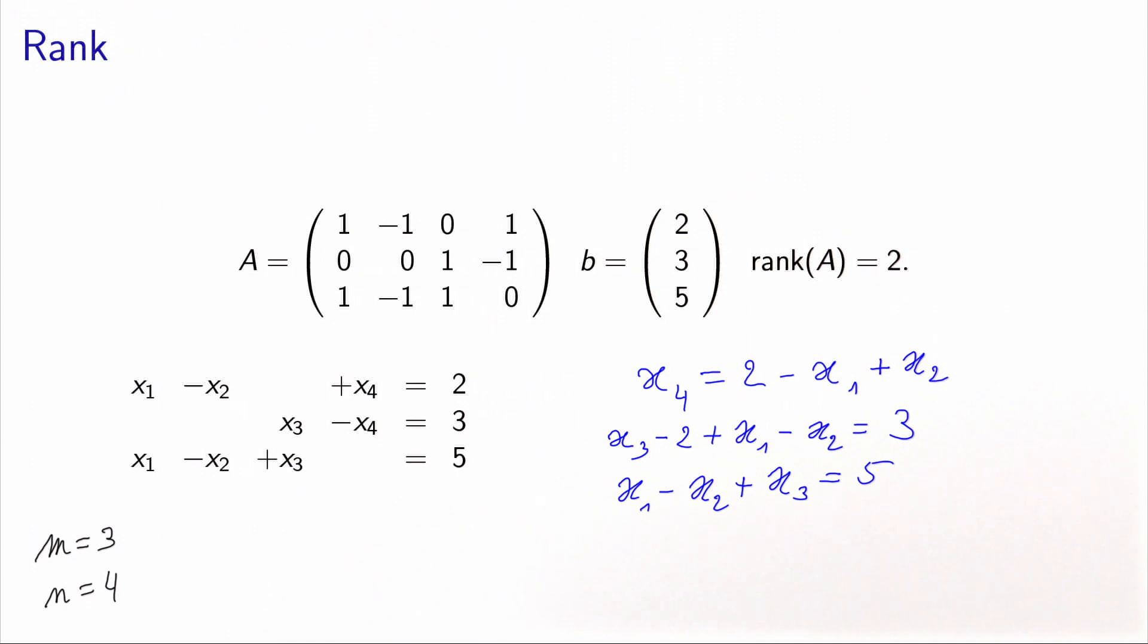We obtain x1 minus x2 plus x3 equals 5. But this constraint that we have obtained by combining the first two constraints is exactly this one. So basically the third constraint that we have written is redundant. It does not add anything. In practice, we can actually remove it. It's not necessary. We can remove this constraint and the feasible set, the polyhedron, will be exactly the same.